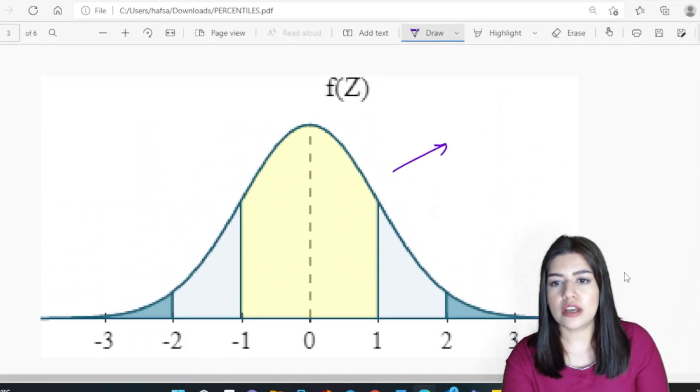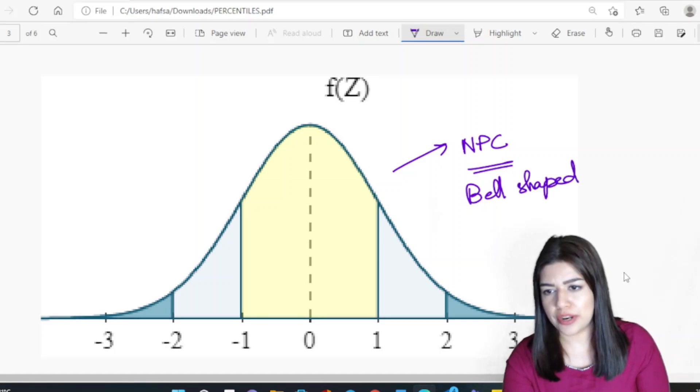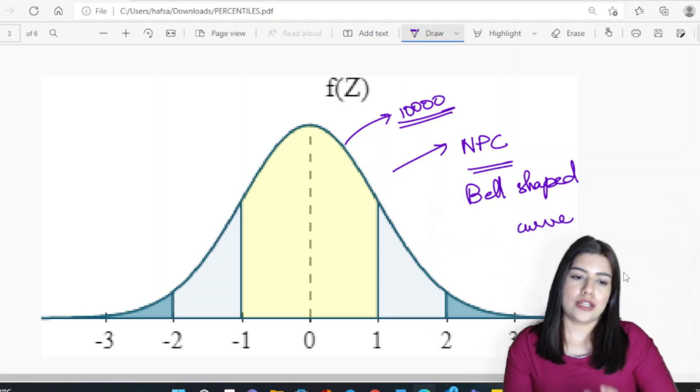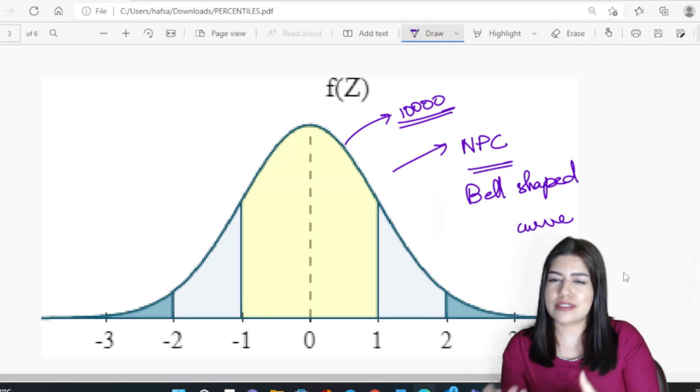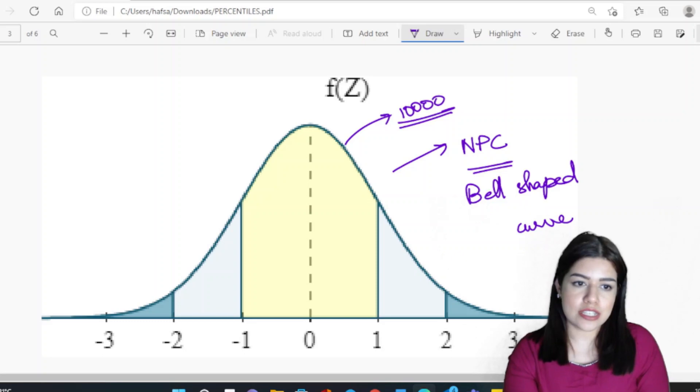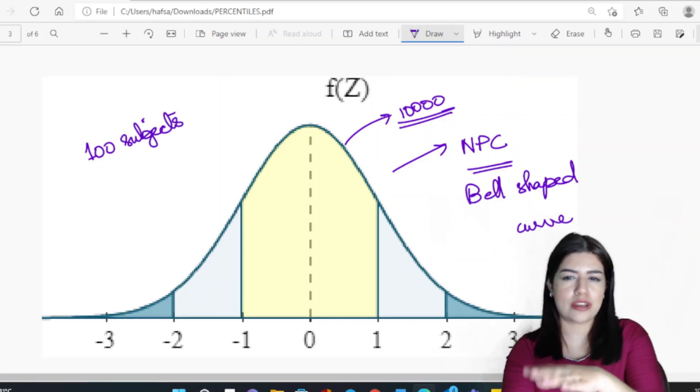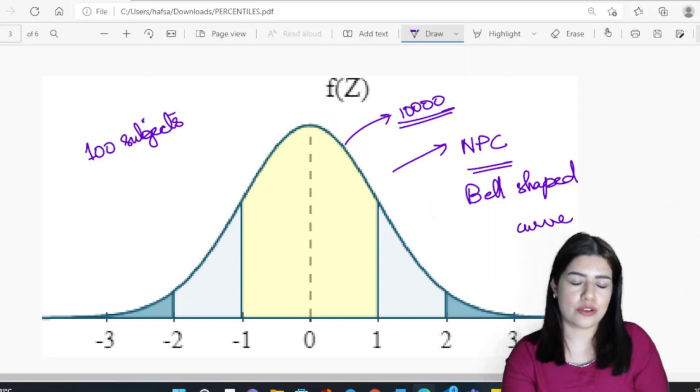This is how a normal probability curve or a bell-shaped curve is mostly shaped. Generally we talk about the population or a sample of around 10,000 when referring to the normal probability curve. Now this is about z scores, this is about standard deviations, but I'm going to try to simplify it for you as much as I can. So let us think, when we are calculating percentile, we actually want to know out of our hundred subjects, where do I stand?